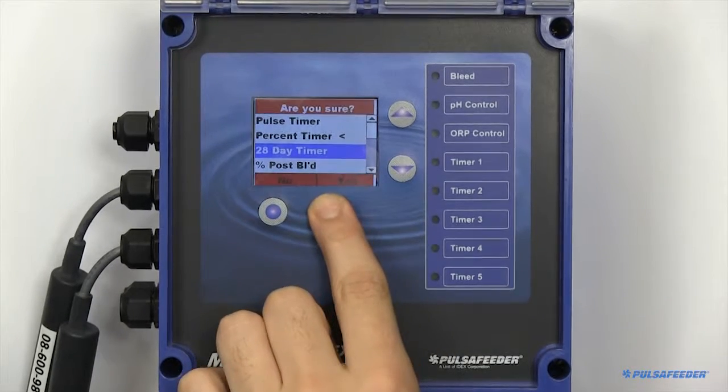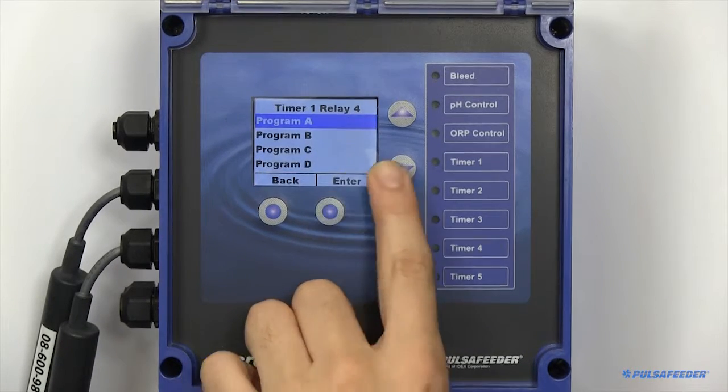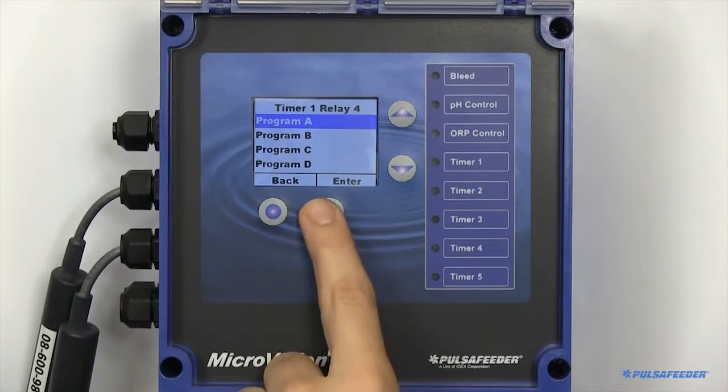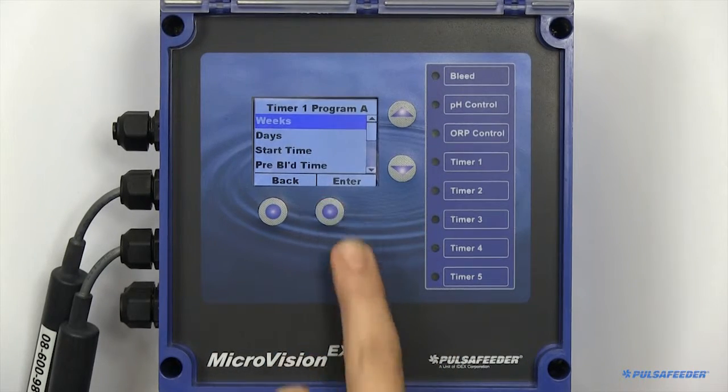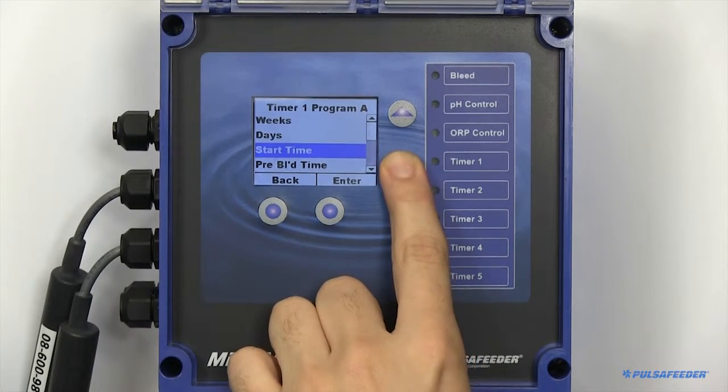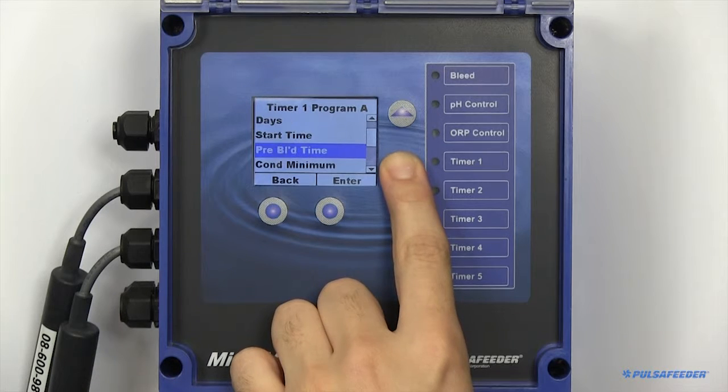A 28 day timer, or biocide, can have four programs running on each relay. To set up a single program of a biocide timer, you need to configure the weeks, days, start time, feed time, and if applicable, specify a prebleed, minimum conductivity, and bleed blockout.